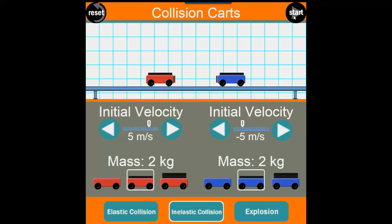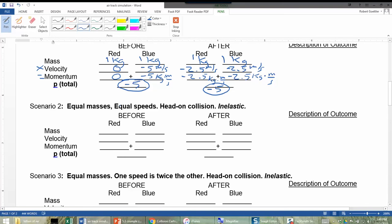I'm going to help you fill in the chart, and then you can take over from there. So before, the red one was two kilograms. The blue one is two kilograms. Velocity is positive five meters per second. Blue is negative five meters per second.